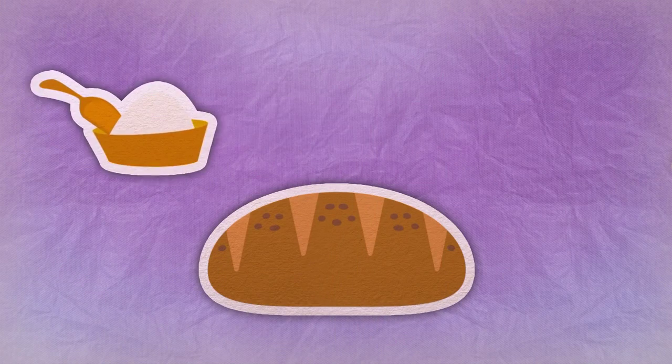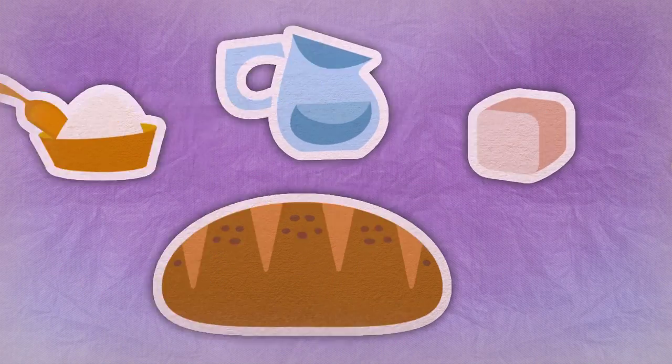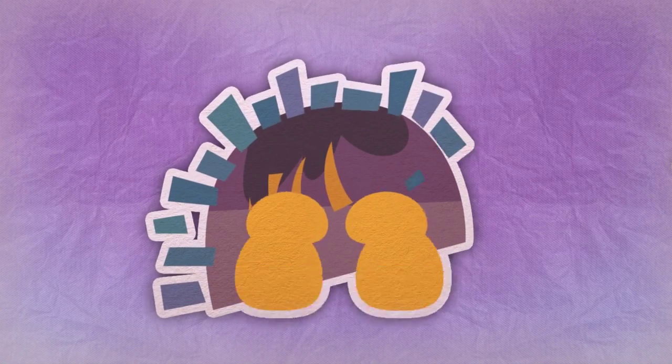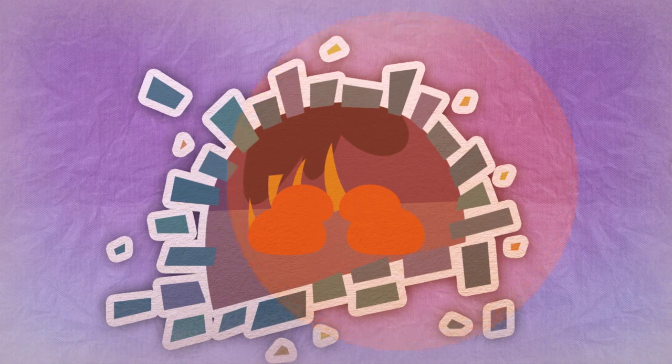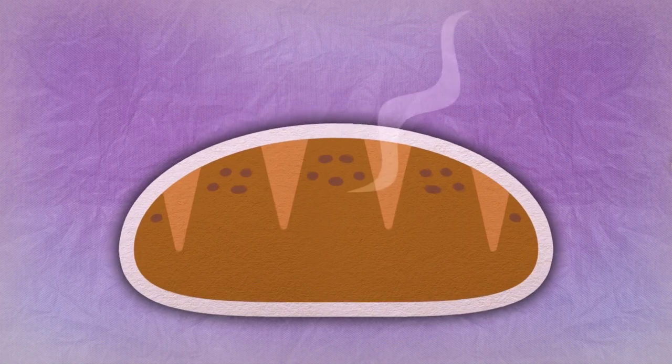Bread is made with flour, water, and yeast. Yeast is made up of tiny little grains and is needed to make the dough soft. When the dough is ready, it's divided into loaves and then put in the oven. Once it's baked, the loaves are fragrant and crispy and ready to be eaten.